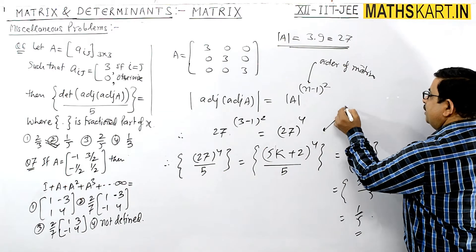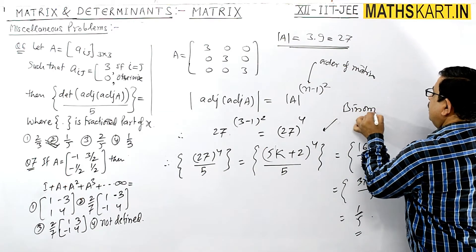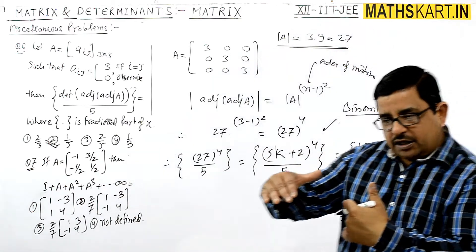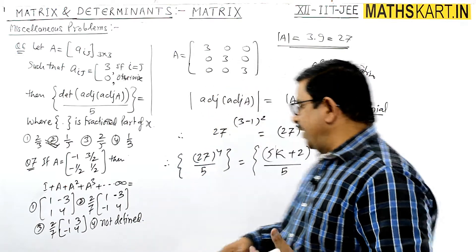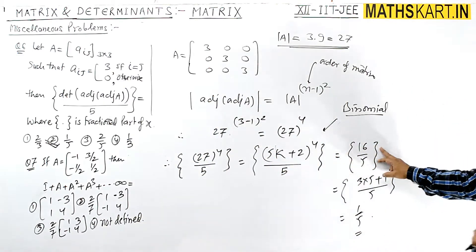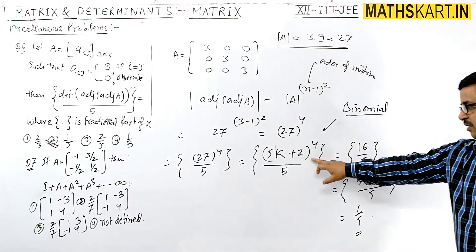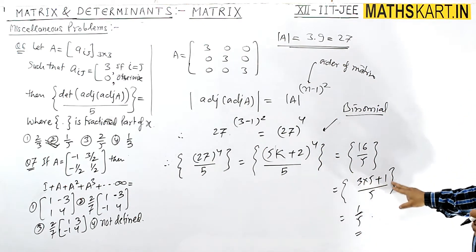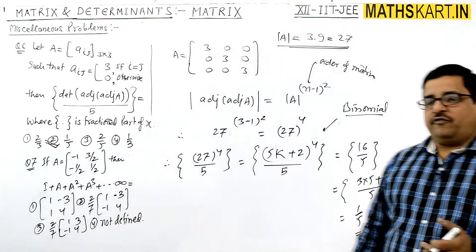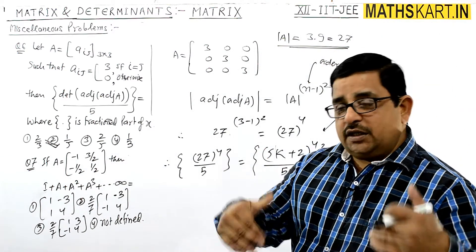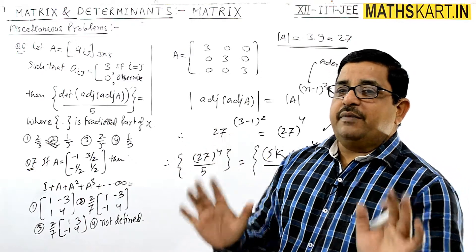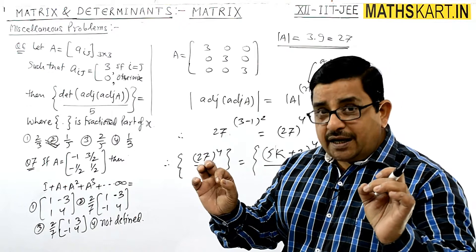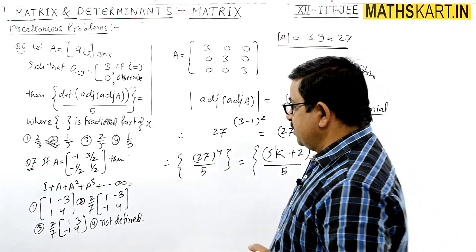A little use of binomial is needed here. In the binomial expansion there were five terms, but all terms except the last are divisible by 5, so they leave no fractional value. The remaining term gives the fractional part. The answer is 1 upon 5.